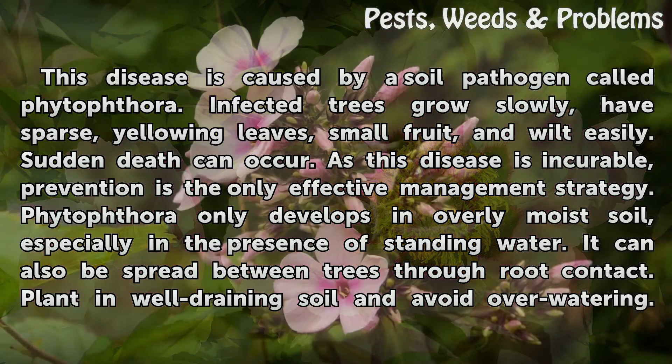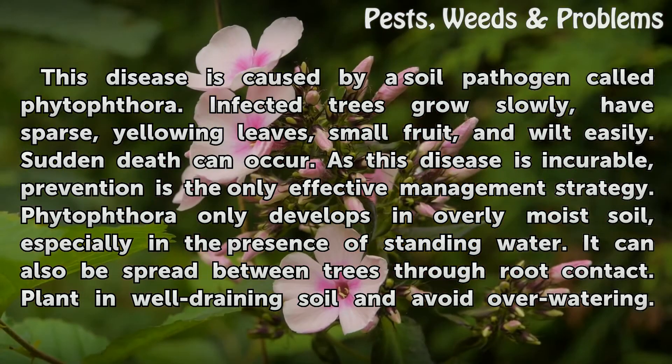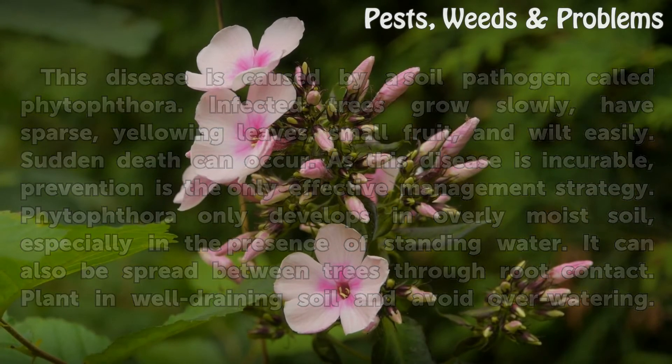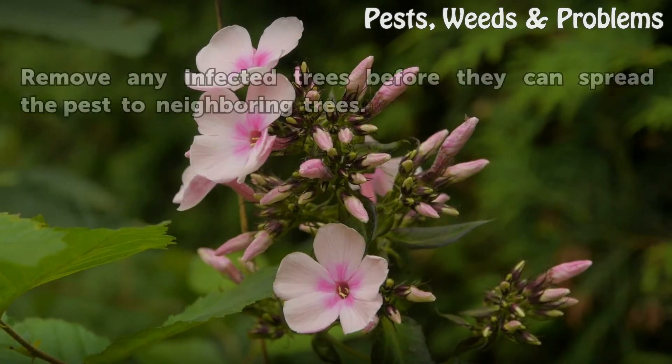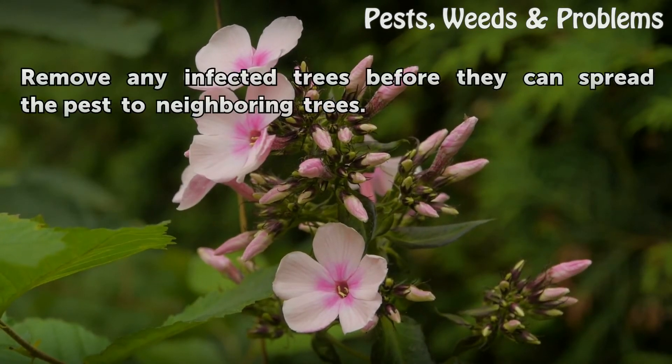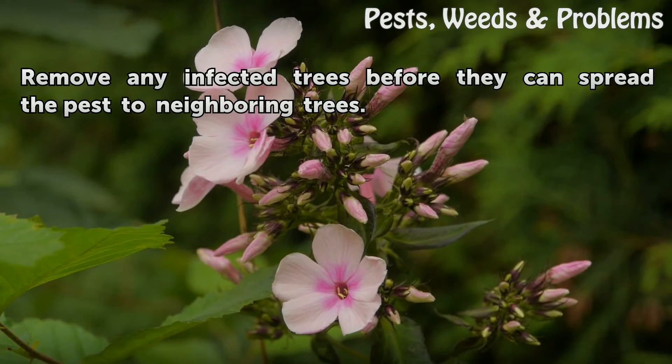Crown and Root Rot can also be spread between trees through root contact. Plant in well-draining soil and avoid overwatering. Remove any infected trees before they can spread the disease to neighboring trees.